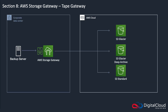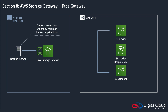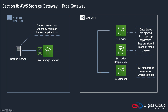The third type is Tape Gateway. In this case, you have backup servers on-premises running software like Commvault, NetBackup, or Veeam, and you're backing up to a virtual tape library. AWS Storage Gateway presents that virtual tape library to your backup server. When you're writing data to the tape — while the tape is mounted — the data goes to S3 Standard. When you eject the tape, the data is then stored in S3 Glacier and Glacier Deep Archive, very cost-effectively. It's an iSCSI connection to the VTL library.